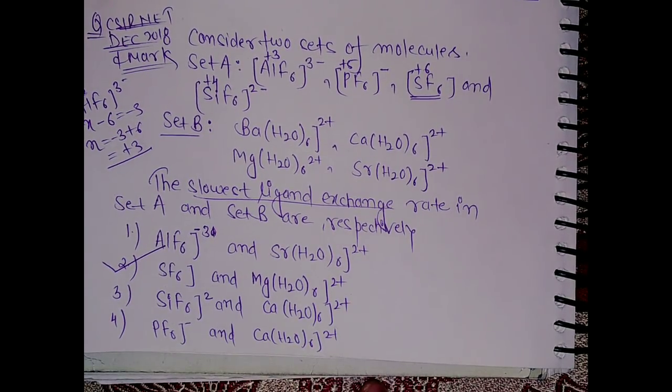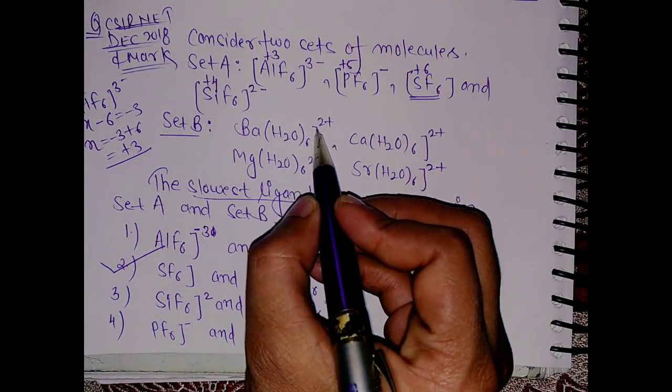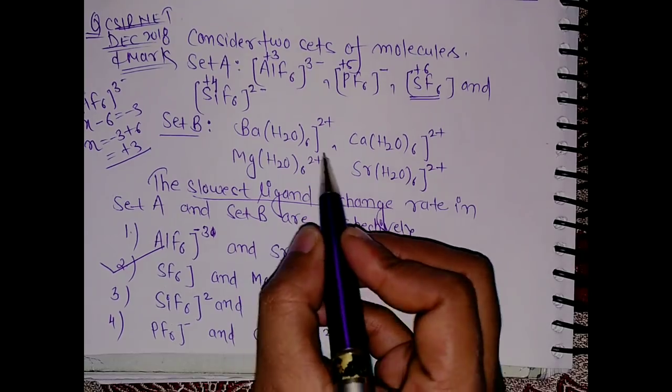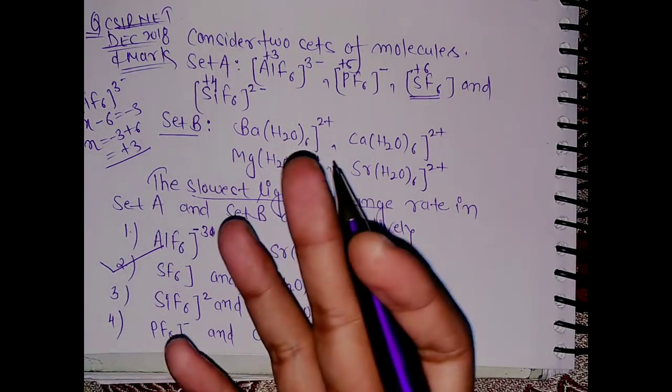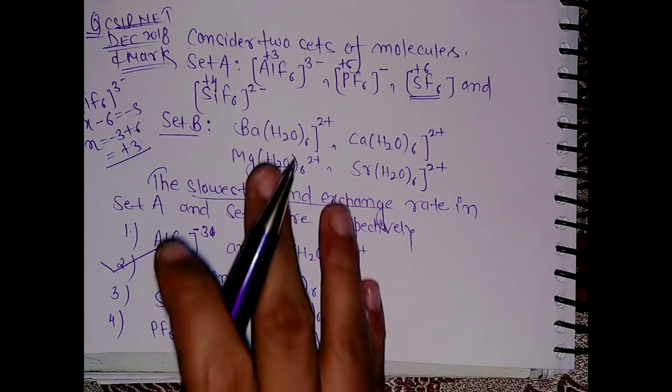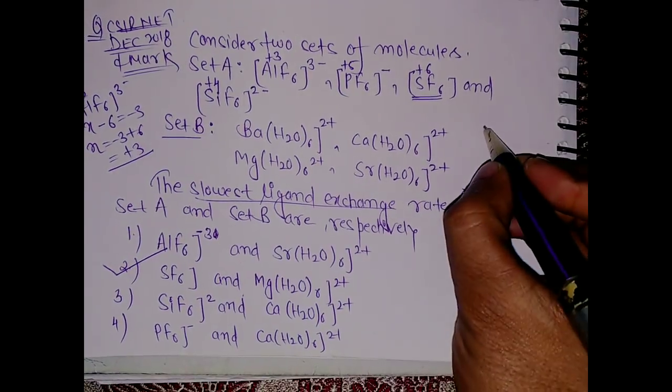Now one more thing. Let's say in Set B here, if you look at the oxidation state it is similar for all the four compounds. So the question arises how you will solve for Set B?